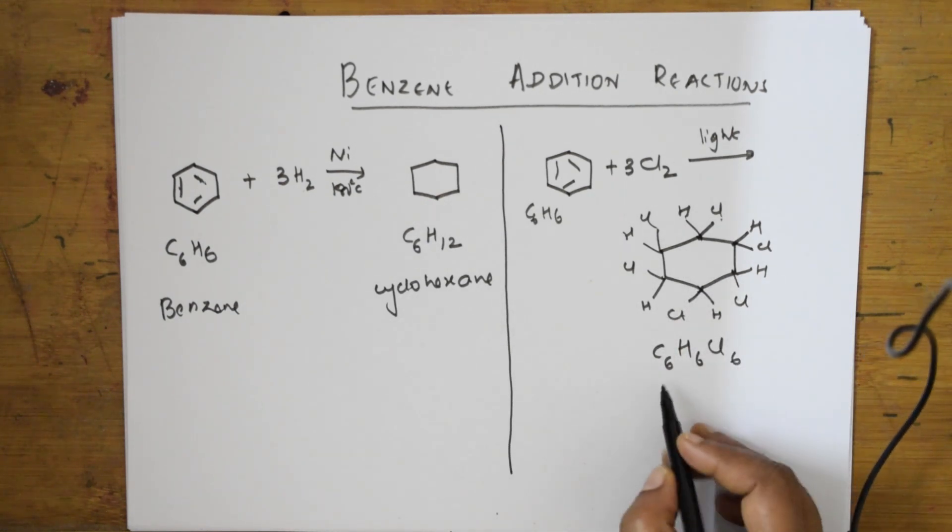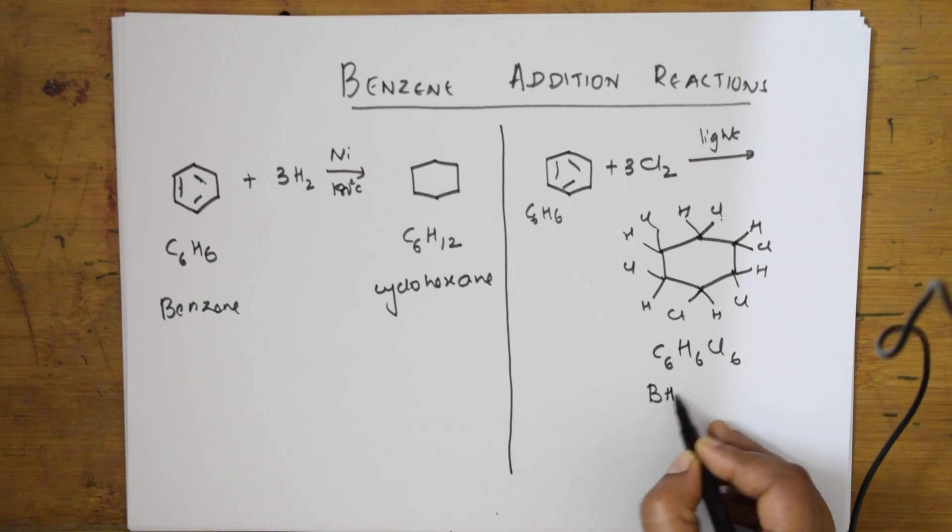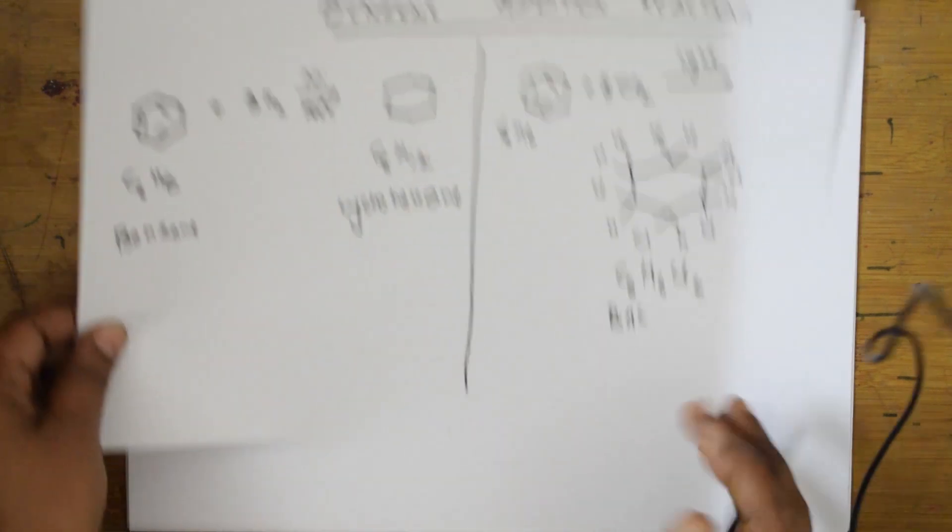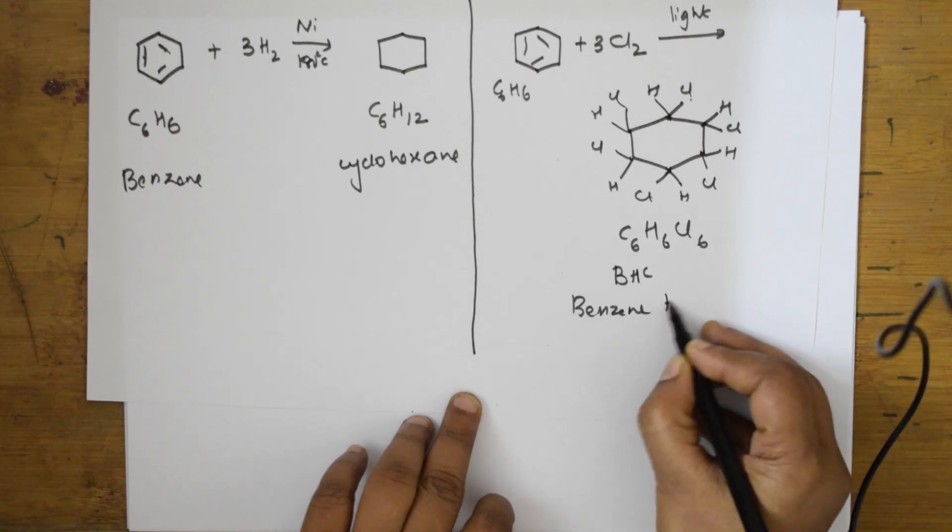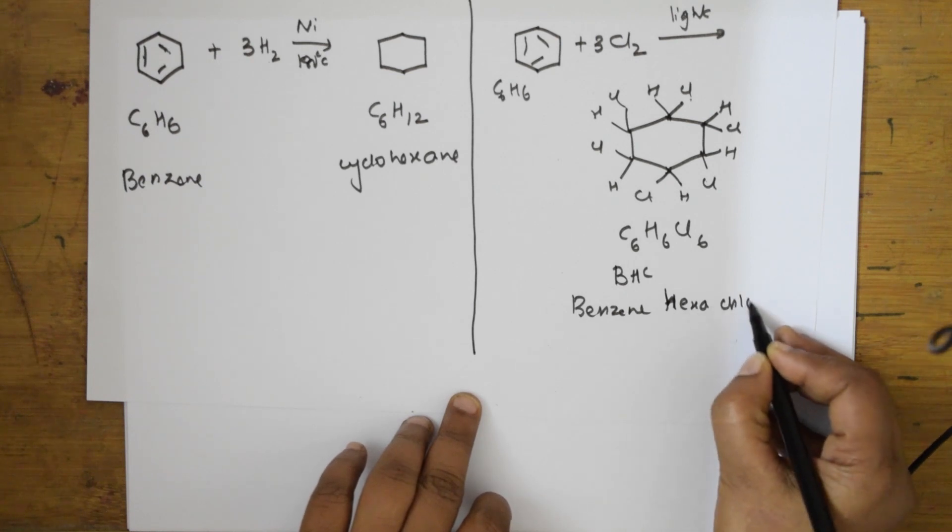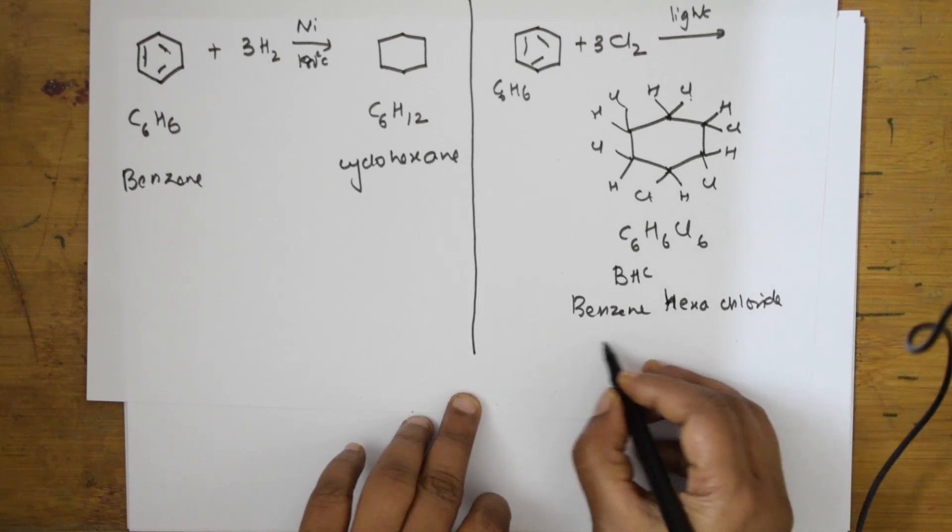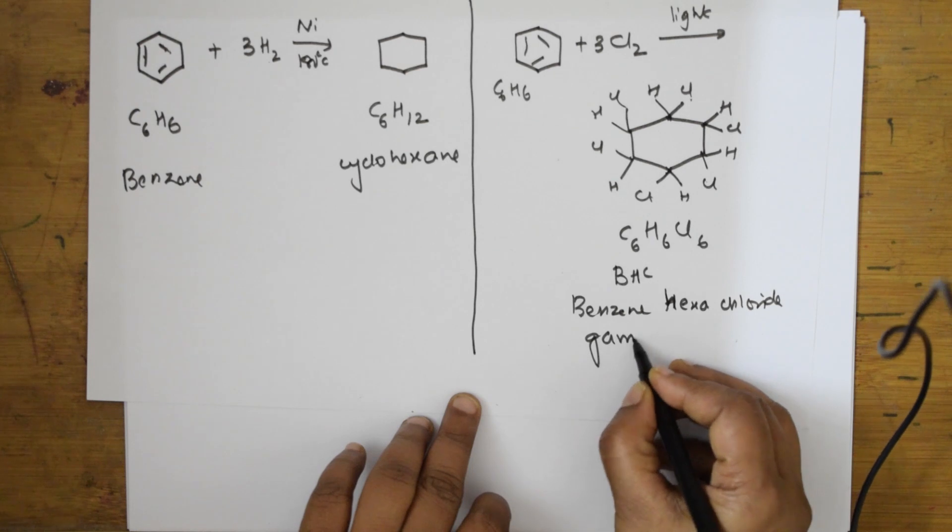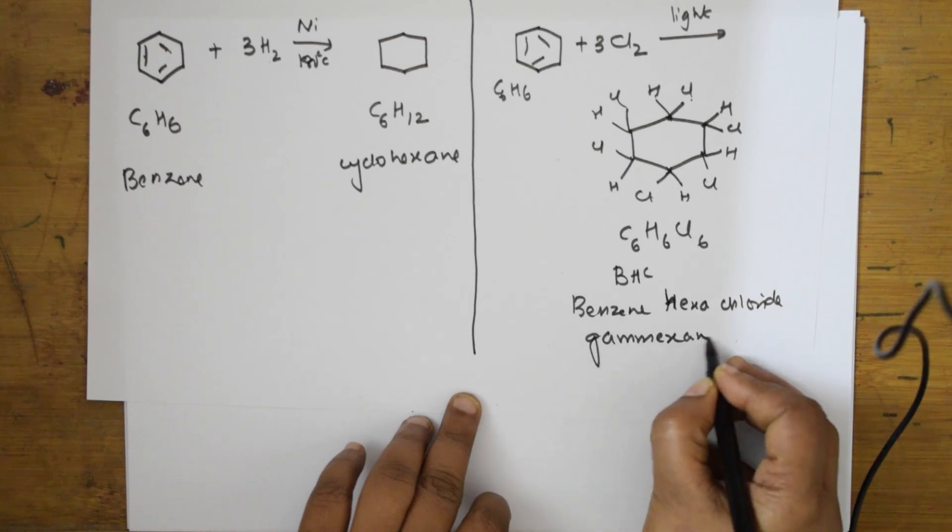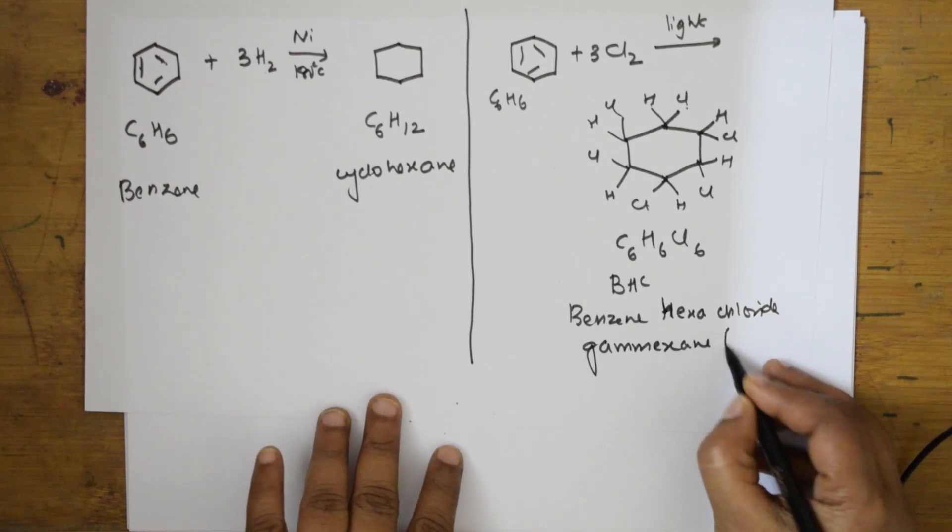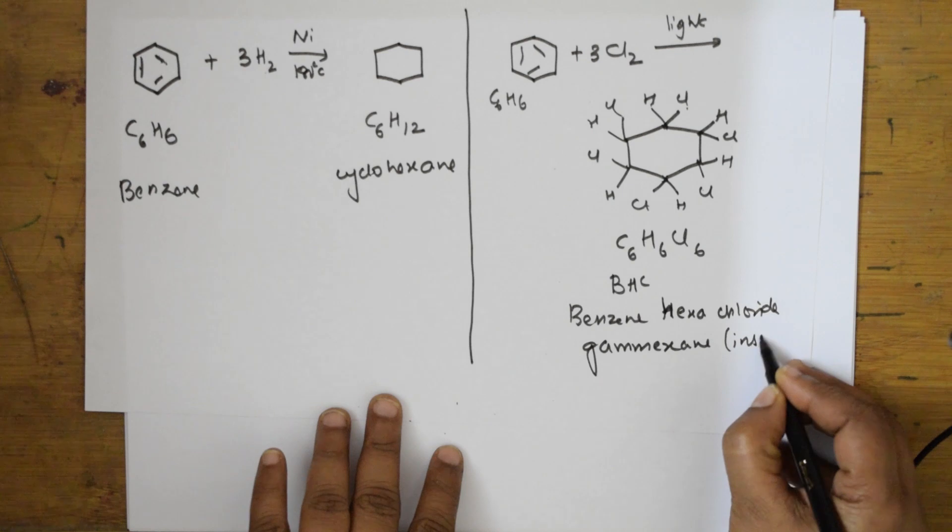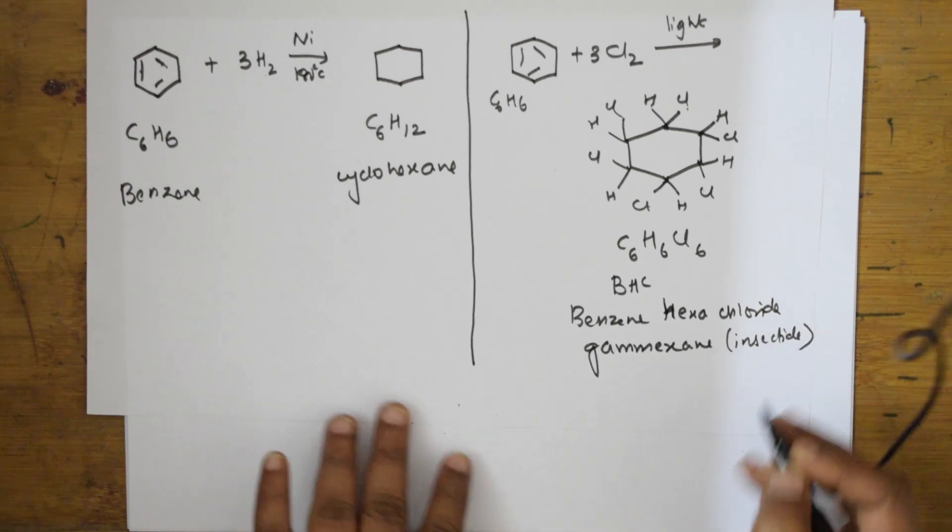This is called BHC. The full form for BHC is benzene hexachloride, or it is also called Gamaxine. Where are we using Gamaxine? We are using it in the form of insecticide, particularly for insects and small ants.